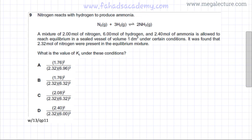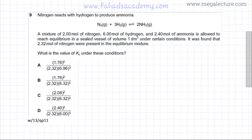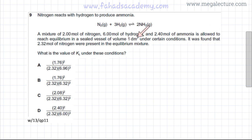The question states that a mixture of 2 moles of nitrogen, 6 moles of hydrogen, and 2.4 moles of ammonia is allowed to reach equilibrium in a sealed vessel of volume 1 dm³ under certain conditions. It was found that 2.32 moles of nitrogen are present in the equilibrium mixture.